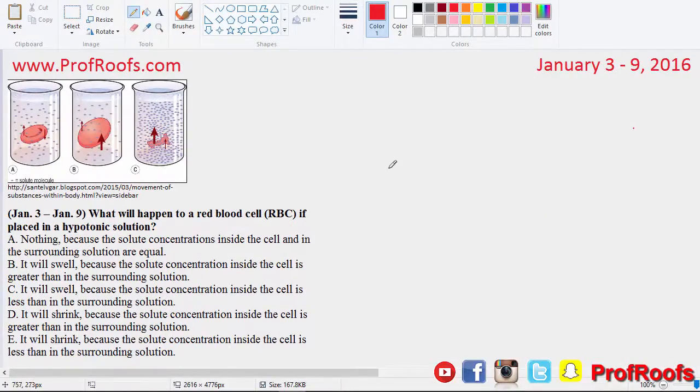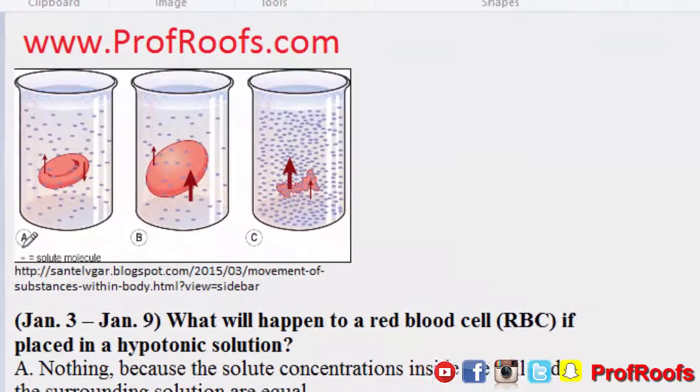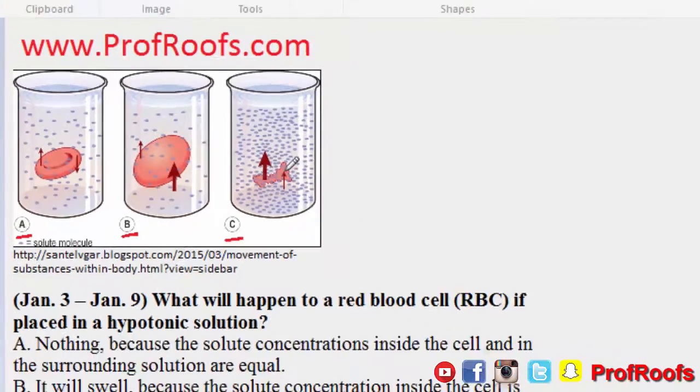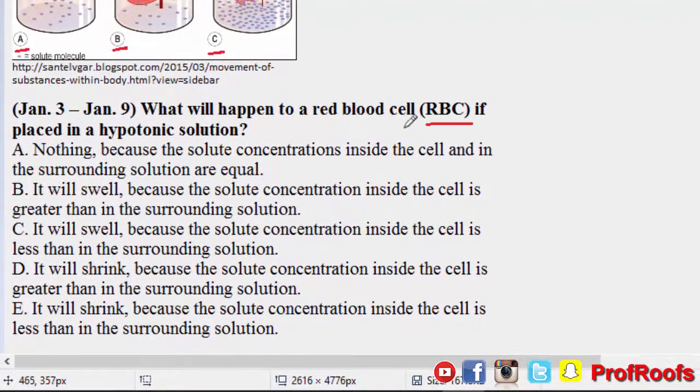I copied the question over here and we're going to be talking about osmosis. We have three conditions: beaker A, beaker B, beaker C, and inside each one of them you see a red blood cell. In the first one, the red blood cell's normal. In the second one it's enlarged, and in the third one, C, it has gotten smaller. The question is asking what will happen to the RBC if it's placed in a hypotonic solution.